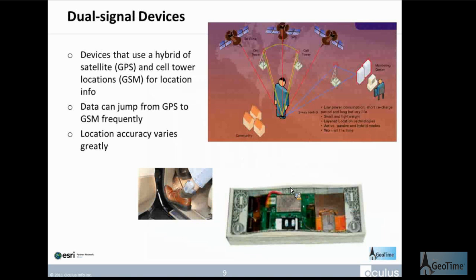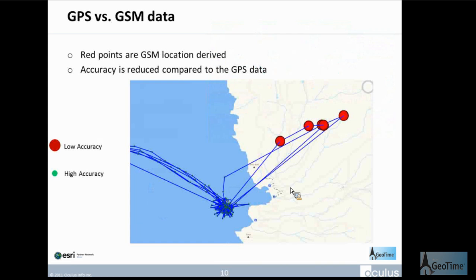Lastly, one thing we should be aware of is that when receiving location data, quite often the same device can use multiple types of data. In this example, I'm talking about GSM — cell tower data — versus GPS, which is satellite data. Quite often the same suspect using the same device will connect to both a GPS system and a GSM system within the same series of movements, and with each different system we have different degrees of accuracy. In the bottom left, you'll see an aggregation of green dots coming from a GSM system with a high degree of accuracy — we can see a clear series of movement patterns.